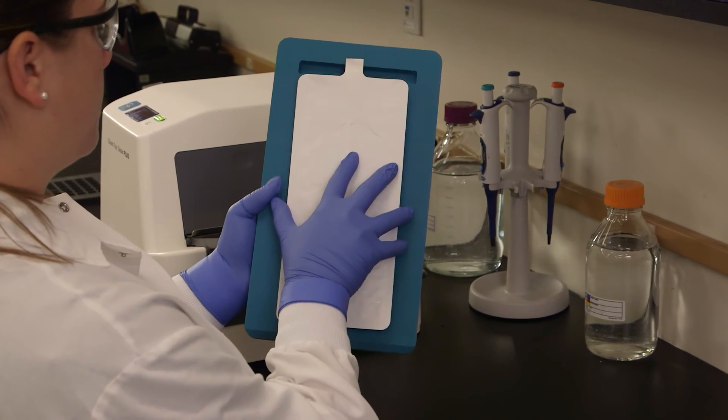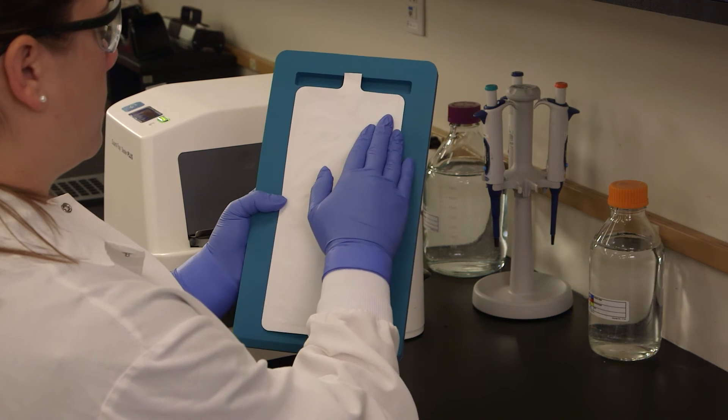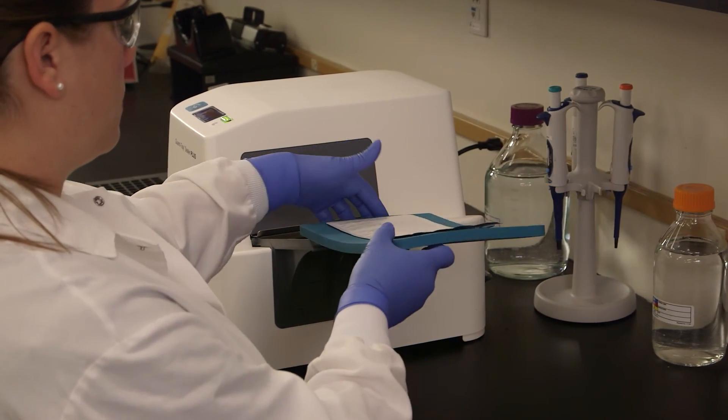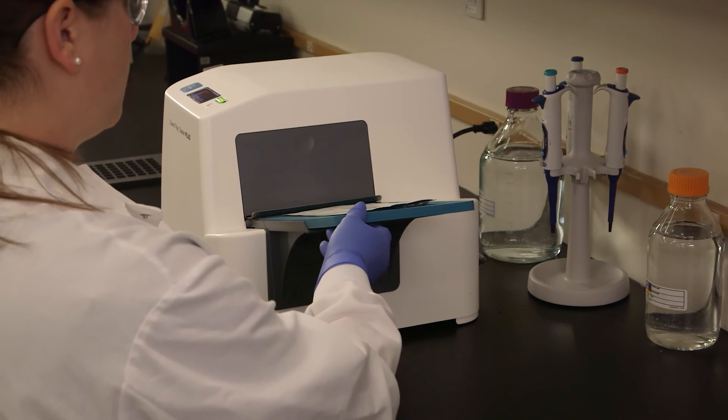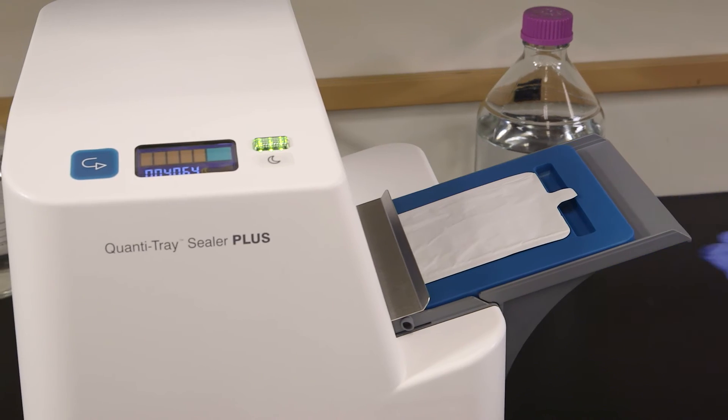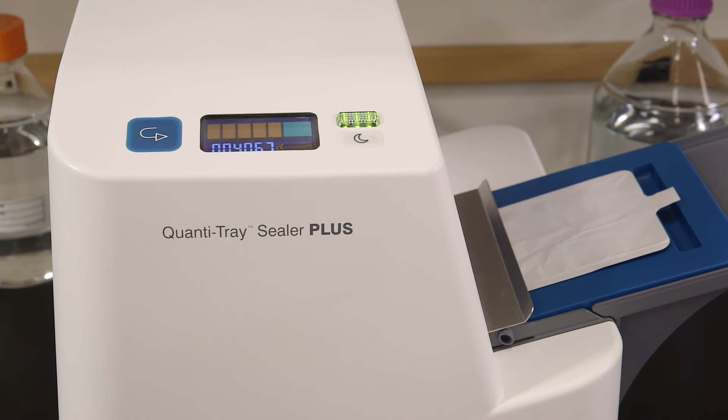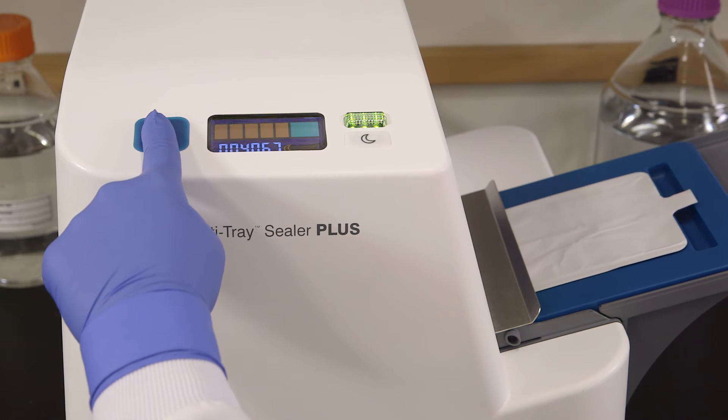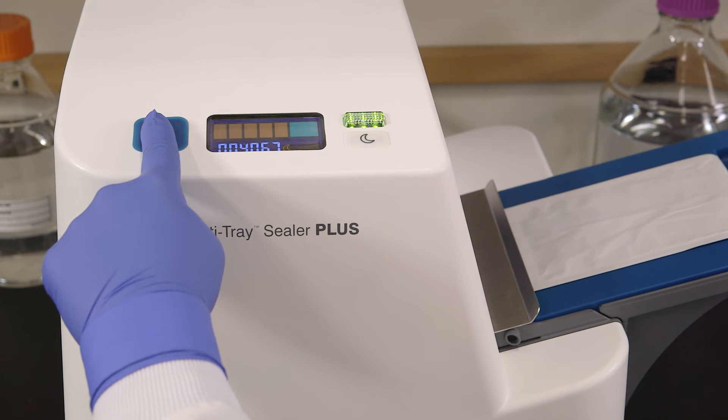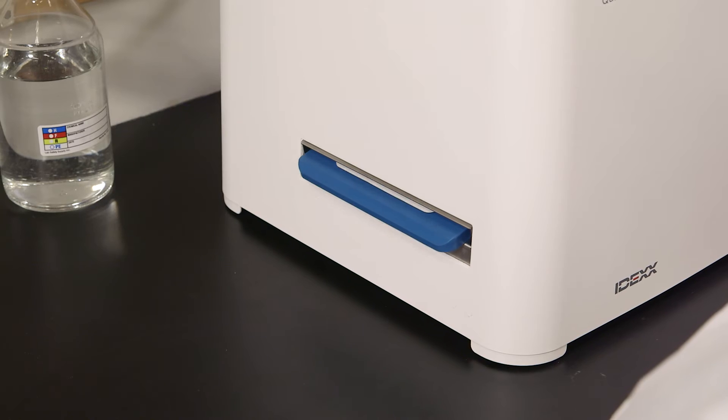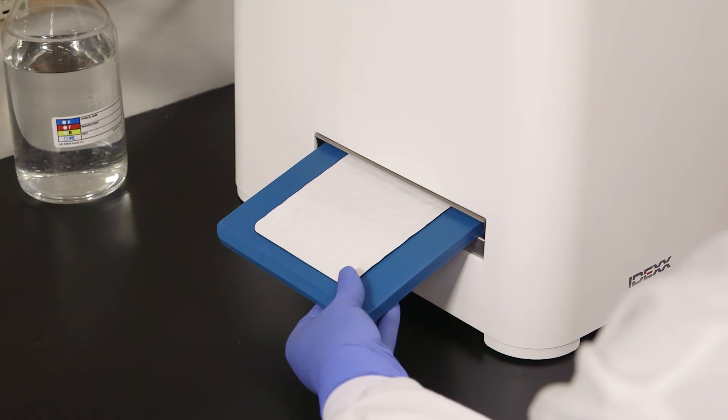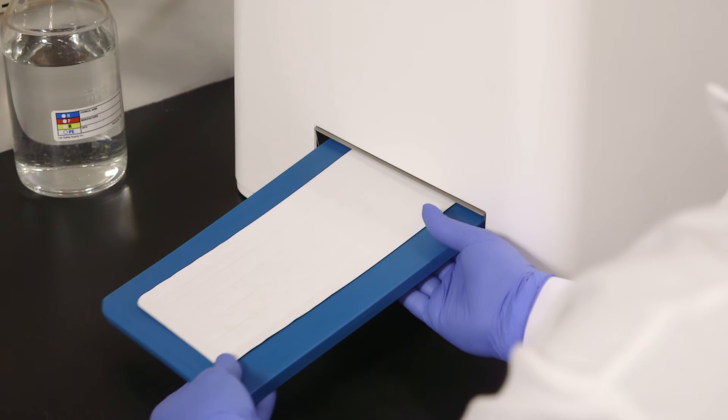Place the filled Quantitray on the rubber insert, making sure each well fits its corresponding hole. Push the insert with tray into the sealer until the sealer grabs the tray and pulls it into the slot. If you need to reverse the motor, press and hold the reverse button. However, do not reverse the motor if the rubber insert is completely inside the sealer. The sealer distributes the sample mixture into the Quantitray wells, seals the wells, and partially ejects the sealed tray.